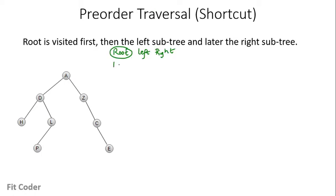So the root is visited first. The trick for doing the quick traversal is we start from the root node and go along the edges. Whenever we visit a node for the first time, we print it.